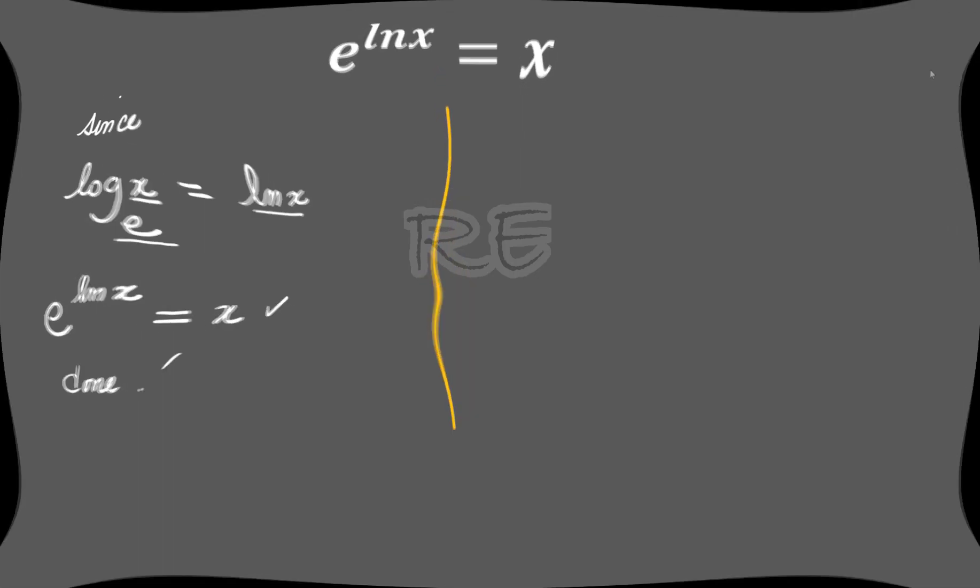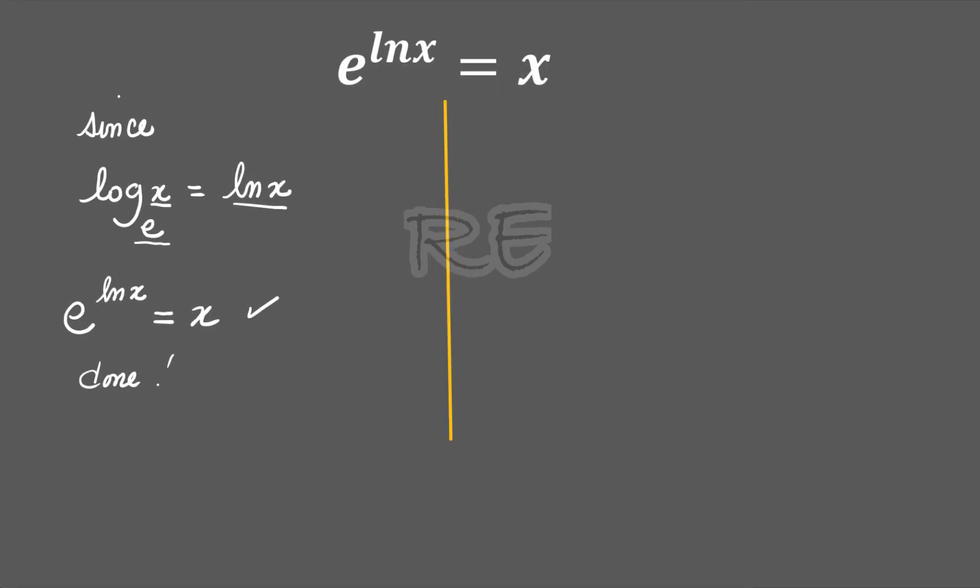Now we can get fancier. We can say if we have e to the ln x equal to x, we can say that if y is equal to e to the ln x, we're going to take the ln of both sides. ln y will be ln of e to the ln x.